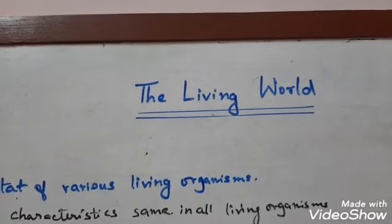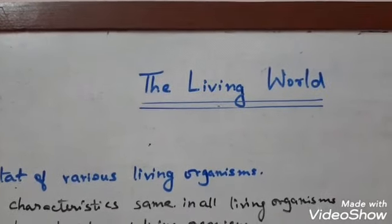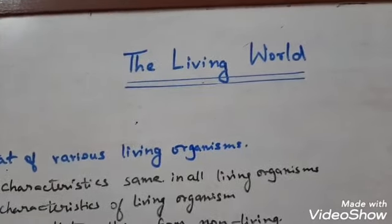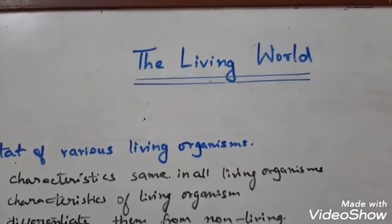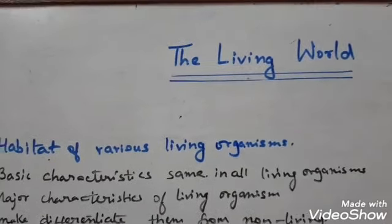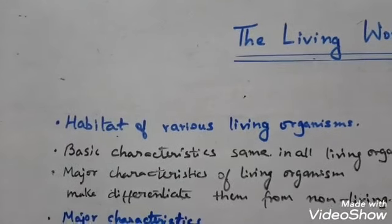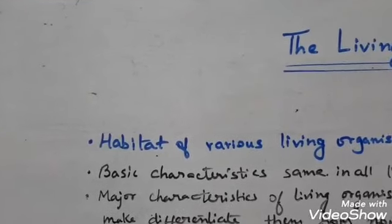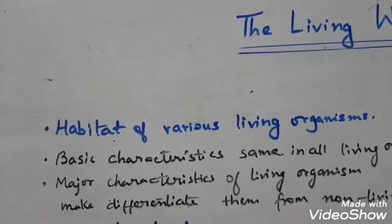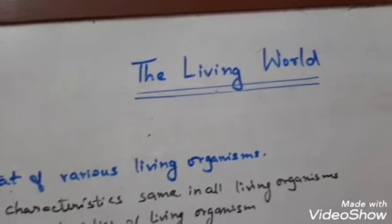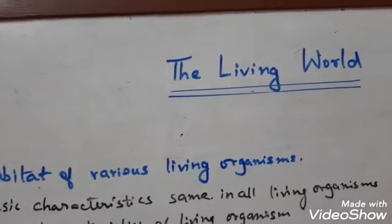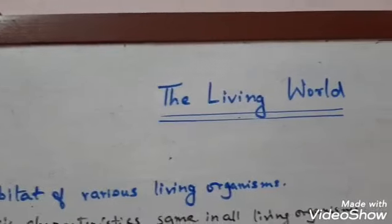Today I am going to introduce a new topic of Class 11: The Living World. It is the very first chapter of your syllabus. In this chapter we will study various comparative features of living and non-living things. Earth is a home of diverse forms of living organisms. We can see various types of snails, insects crawling around, fishes, birds, and various plants — all comprising the diverse forms of living organisms around us.